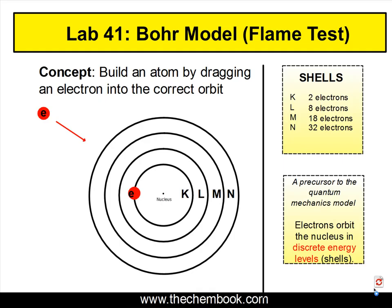What we have in front of us is the nucleus in the center and around it, in discrete orbits, we have the K, the L, the M, and the N shells. Each of these orbits or shells is able to hold a different number of electrons.